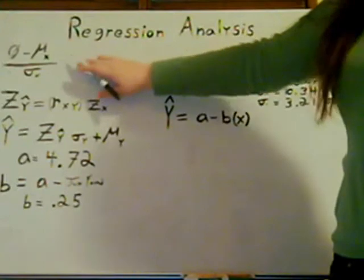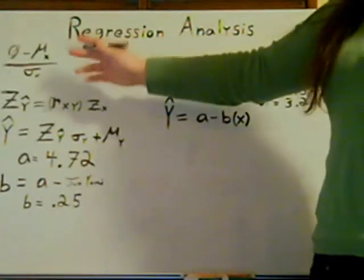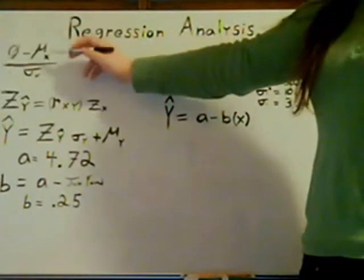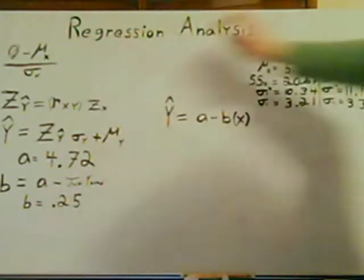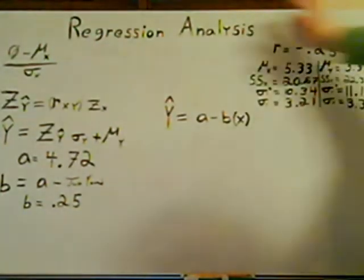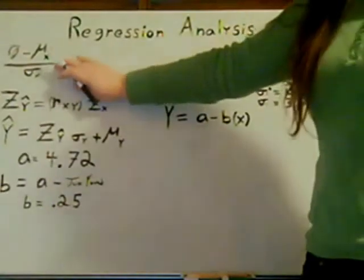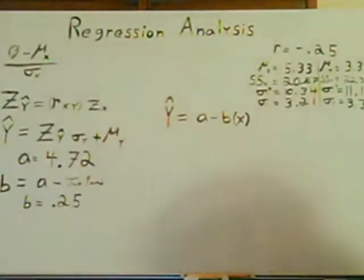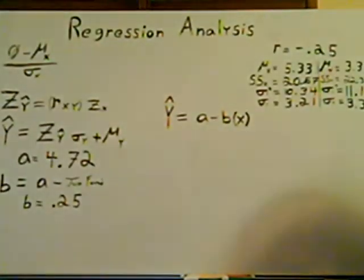So, it's the same z-score formula, except you have your X now. And it's zero minus the mu of X, which if you remember we found earlier, divided by the standard deviation of X. When that's worked out, you should get negative .166.